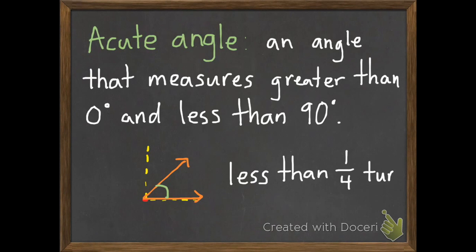And off of yesterday's lesson, this would be something that is less than one-fourth of a turn. So anything that's less than that 90 degrees, and it still has to be more than zero.